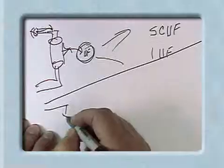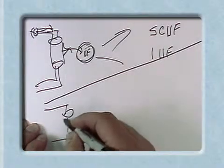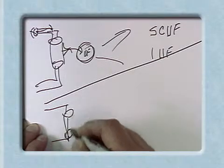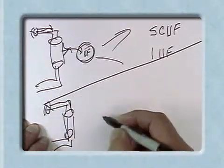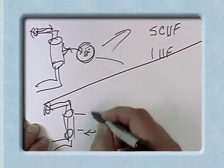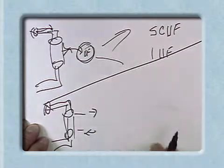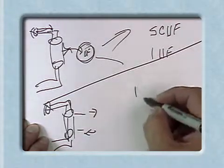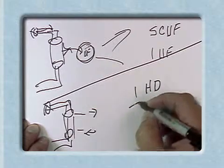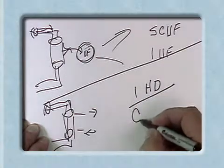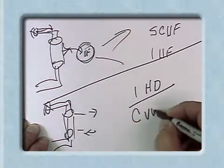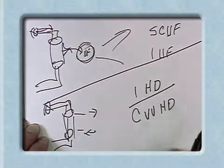Moving on to dialysis — the same thought process applies: blood flowing in, dialysate flowing in and out. This is standard intermittent hemodialysis, or if done in a veno-venous continuous format, it becomes continuous veno-venous hemodialysis.